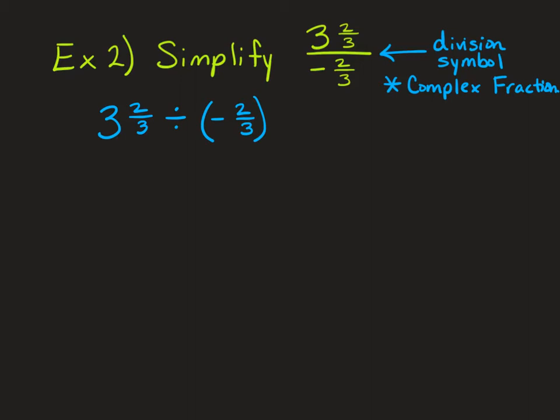We want to write these as both fractions. Use around the world for 3 and 2 thirds. 3 times 3 is 9, and 9 plus 2 is 11. So we have 11 thirds divided by negative 2 thirds. We're going to use same opposite switch. Keep 11 thirds the same, divide switches to multiply, and negative 2 thirds switches to negative 3 halves.